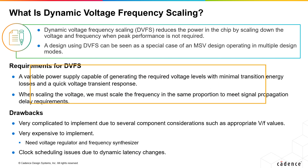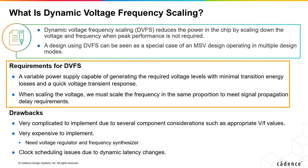There are certain requirements to achieve this methodology. You need a variable power supply capable of generating required voltage levels with minimal transition energy losses and a quick voltage transient response. Also, when you are scaling the voltage, you must scale the frequency in the same proportion to meet the signal propagation delay requirements.